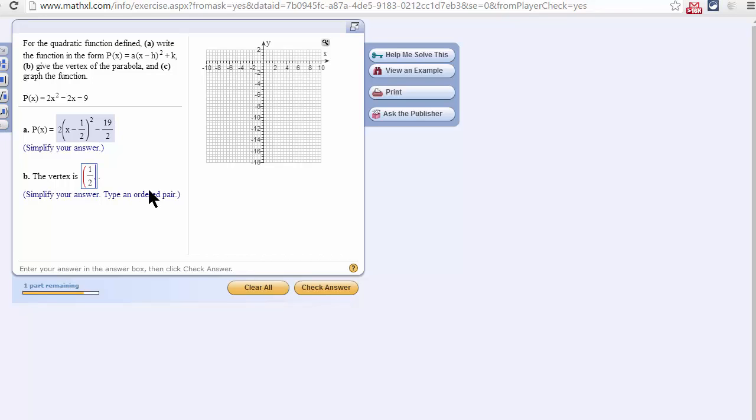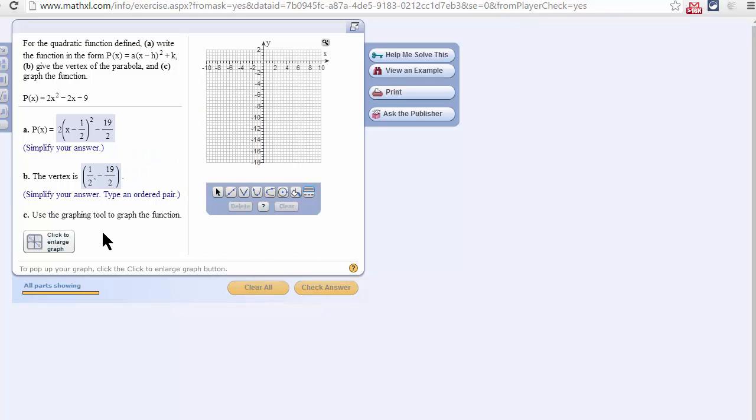Then negative 19 divided by 2, right arrow key, and right parenthesis. Yay! All right.